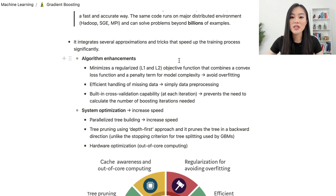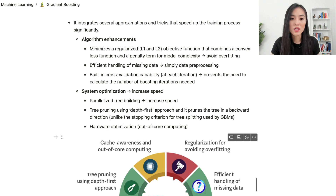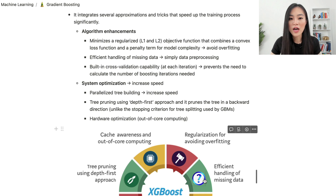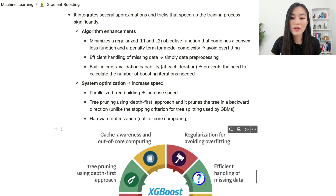XGBoost integrates several approximations and tricks to significantly speed up training. Its algorithm enhancements include: minimizing a regularized objective function that combines a convex loss function and a penalty term for model complexity — helping avoid overfitting. It's also efficient at handling missing data, simplifying the pre-processing step. It has built-in cross-validation at each iteration, which removes the need to manually calculate the number of boosting iterations needed.